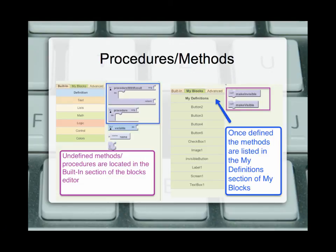In the code blocks editor, in the definition section, we have procedure with result and procedure, and they are clearly blank. Once defined, they're located inside the my definitions screen. I have made two different methods: one called makeInvisible and one called makeVisible. Those methods can be used to make something appear or disappear inside our App Inventor screen, because we're naming things that make sense as to what they do. The default ones are in the definition section on built-in. Once we drag them over, we need to give them a name that makes sense. These are user-defined methods that can be used anywhere inside the app, whereas the dark green methods can be used only by that specific object.